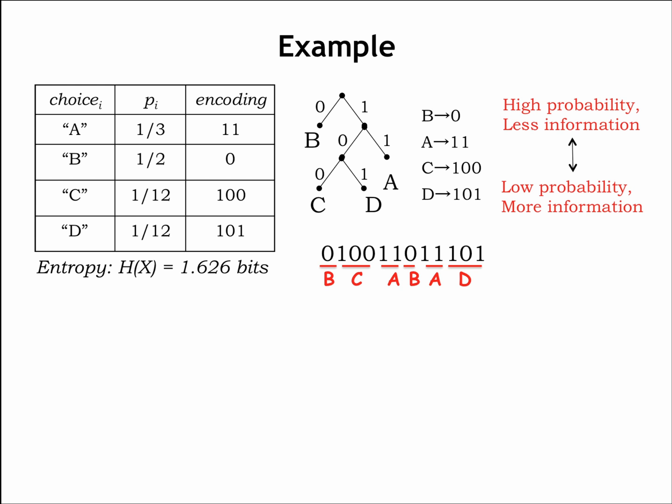Continuing on, 1-1 gives us A, 0 decodes as B, 1-1 gives us A again, and finally 1-01 gives us D. The entire decoded message is BCABAD.